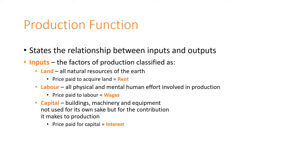Land consists of all natural resources from the earth. The capitalists take these inputs and use them to create different production components. The price paid to acquire land is turned into rents, and the price paid for labour is in the form of wages from the capitalists. Capital — buildings, machinery, and equipment — is not used for its own sake but for the contribution of production. The price the capitalist pays for capital is in the form of interest from the firm.